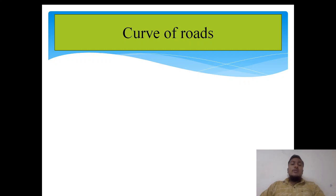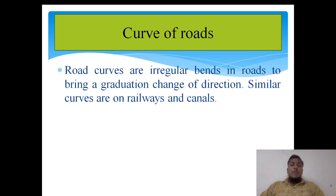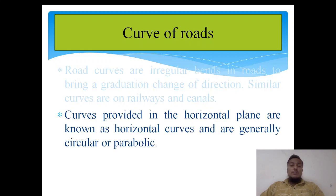Let us move towards the curve of a road. Road curves are irregular bends provided on a road to change the direction, and that is called the curve of a road. Similar curves can also be provided on railways as well as on canals. Curves provided in the horizontal plane are known as horizontal curves, and generally circular curves, parabolic curves, and transition curves are called horizontal curves.